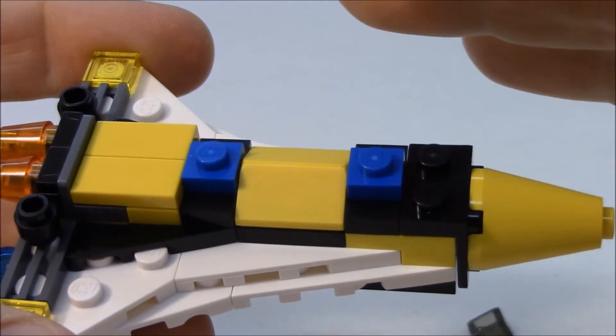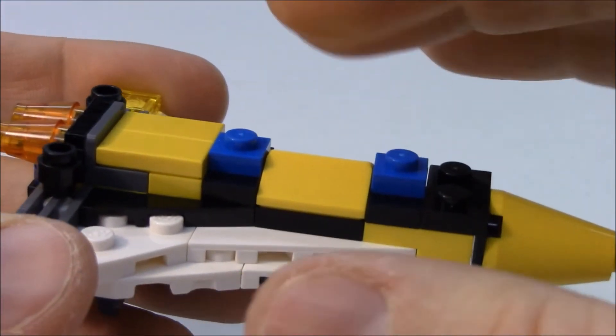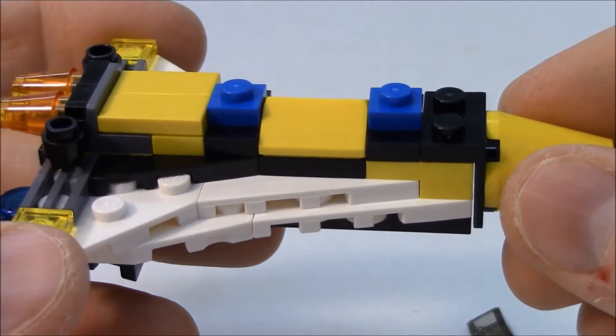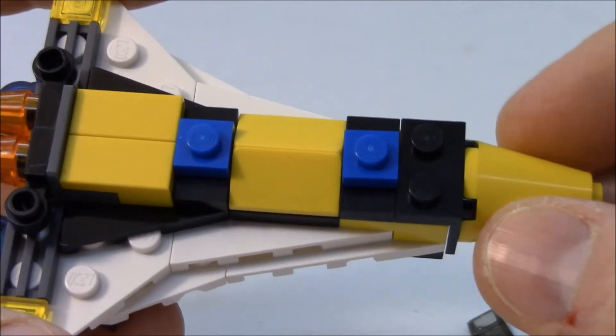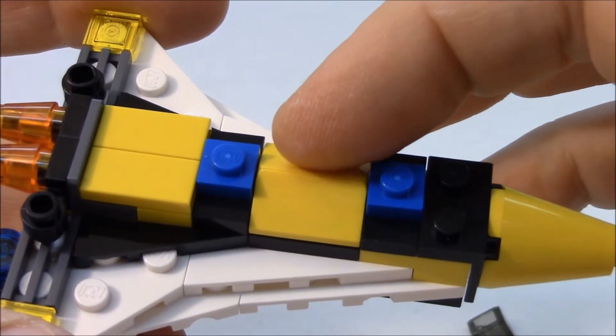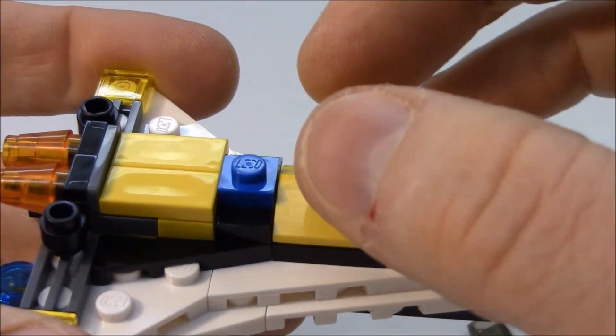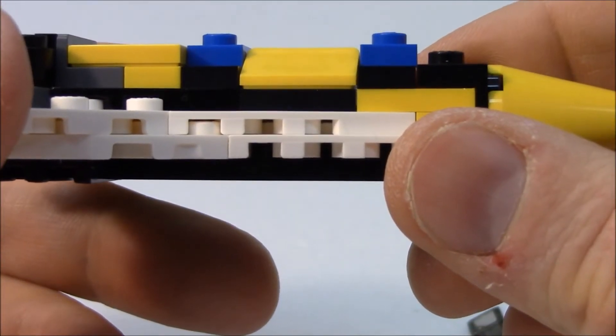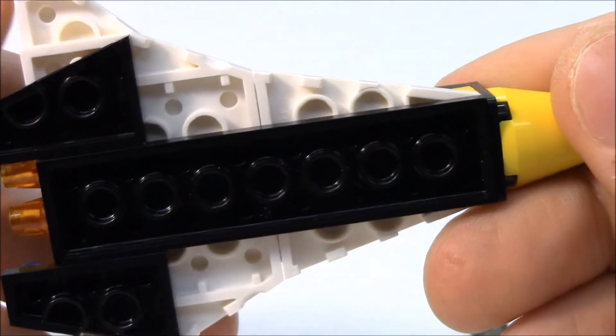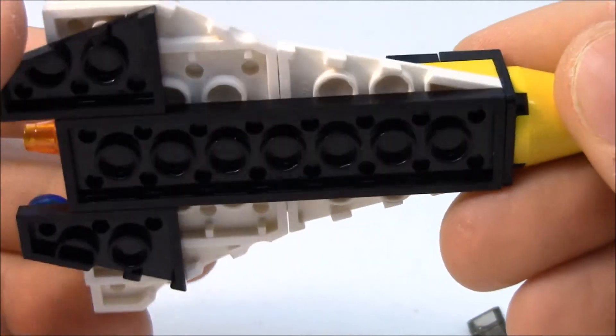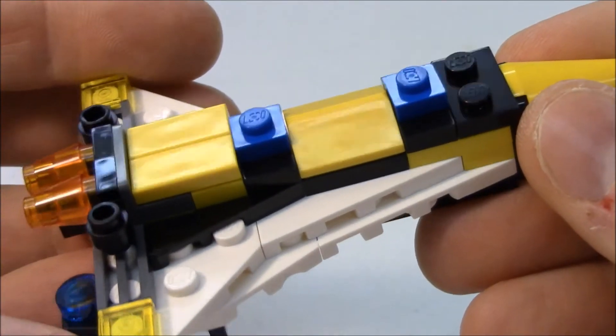Some of the smaller sets, which are not minifigure scale, you at least have a location on the build somewhere where you can put a minifigure. I suppose you could take these two one-by-two slopes out and expose some bricks underneath where you can sit a minifigure. But other than that, there really is not much to talk about in this version.